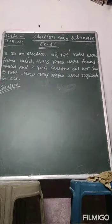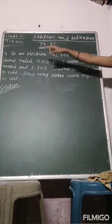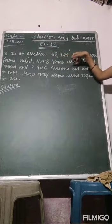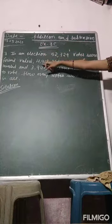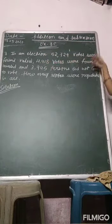Now we will do exercise 3, question number 3. In an election, 52,729 votes were found valid and 4,918 votes were found invalid.